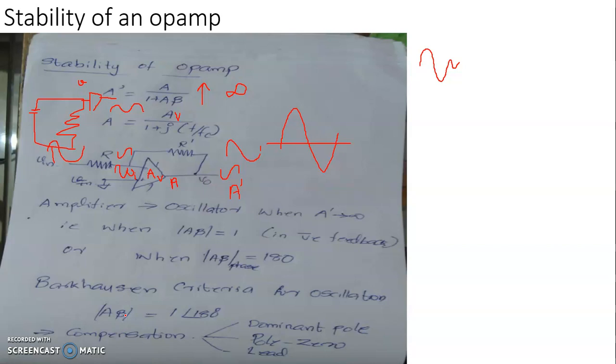These are the two conditions that are satisfied with oscillators. If these conditions are not satisfied, if any other conditions are satisfied, then the op amp will remain stable as an amplifier.